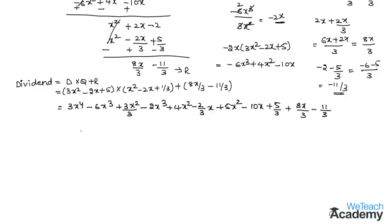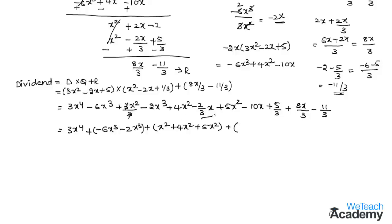Now let us group the like terms. There is only one x⁴ term: 3x⁴. The x³ terms are minus 6x³ and minus 2x³. Cancelling 3 and 3 in the x² terms gives x² plus 4x² plus 5x². The x terms are minus 2x/3 minus 10x plus 8x/3. The constant terms are 5/3 minus 11/3.